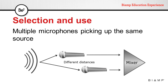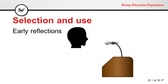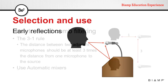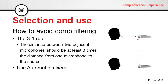Certain frequencies will be mixed in phase, creating constructive interference, while others will be mixed completely out of phase, creating complete cancellation — destructive interference. This can happen when multiple microphones pick up the same source at different distances, or with early reflections. Sound bouncing off nearby reflective surfaces can mix with the direct signal at the microphone, creating comb filtering. To avoid this, we can use the three-to-one rule: the distance between two adjacent microphones should be at least three times the distance from one microphone to its intended source. We can also avoid it by using automatic mixers.